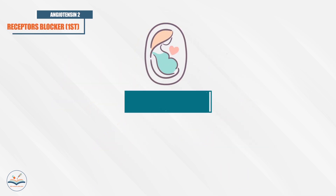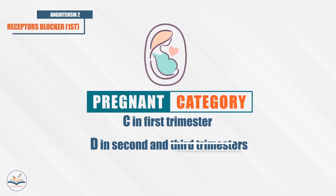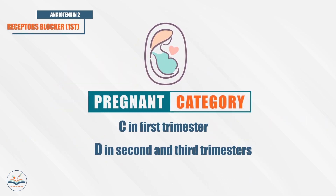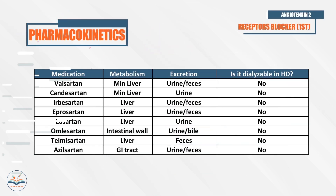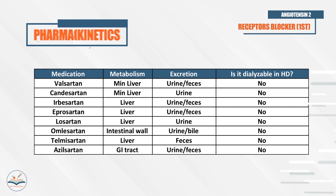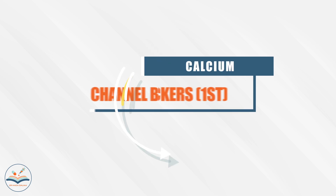ARBs are category C in the first trimester of pregnancy and category D in the second and third trimesters. Most of them are metabolized by the liver and excreted by urine and feces. They are not dialyzable.